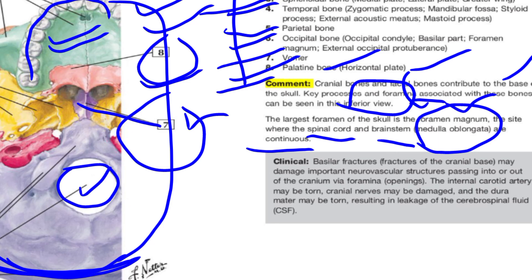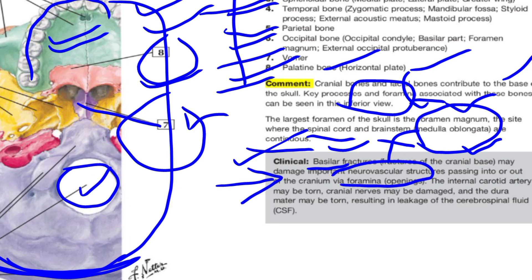In the clinical section we will discuss the basilar fracture — this is the fracture of the base of the skull, the cranial base. Basilar fracture may damage important neurovascular structures where the nerves and vessels pass into or out of the cranium through the foramina. The internal carotid artery may be torn in the case of a basilar fracture, and cranial nerves may be damaged.